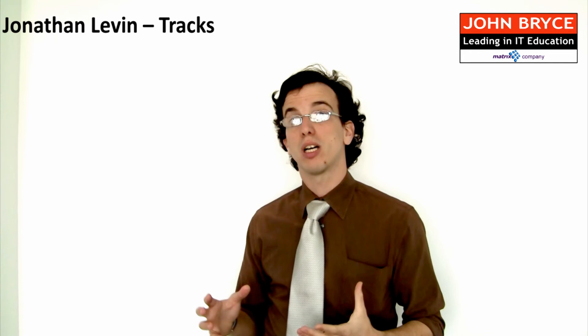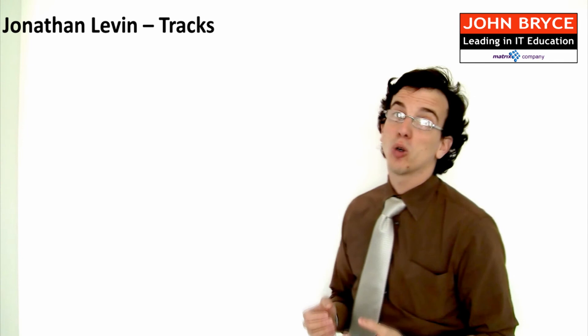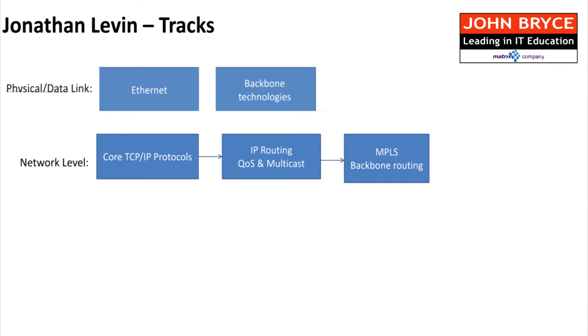At the physical and data-link levels, we talk about the primary protocol today which is Ethernet, and we talk about other backbone technologies and various low-level technologies such as SONET, SDH, TDM, and such. At the network level, the core TCP/IP protocols including emerging ones such as IPv6, also advanced topics such as IP routing, quality of service, multicast, and specific routing protocols such as MPLS — multi-protocol label switching.